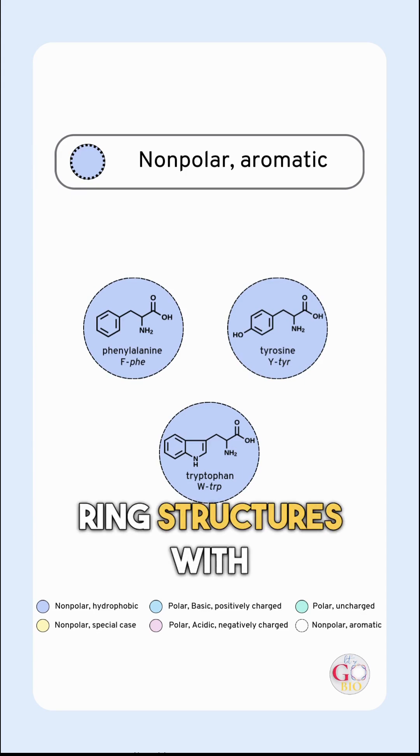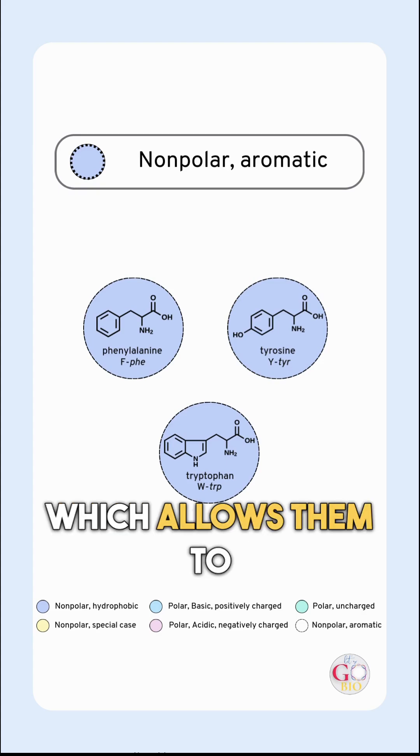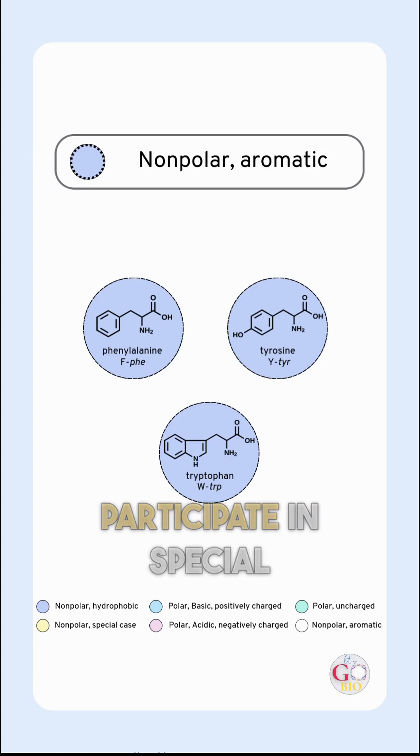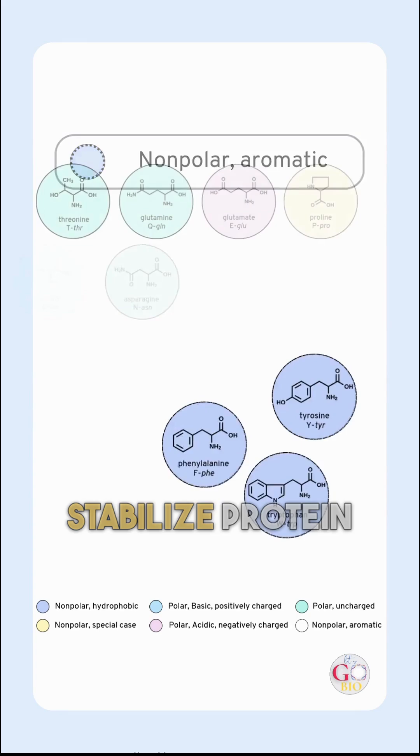These amino acids have ring structures with delocalized electrons, which allows them to absorb UV light and participate in special bonding to help stabilize protein structures.